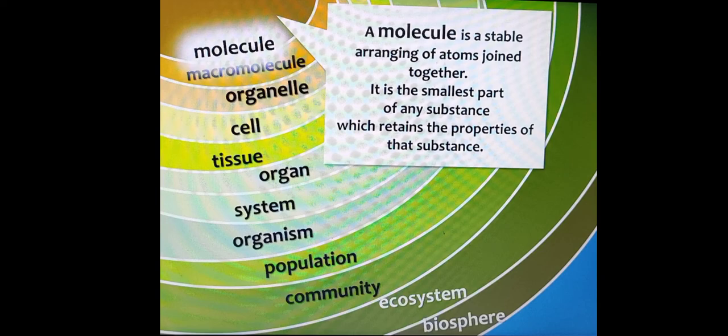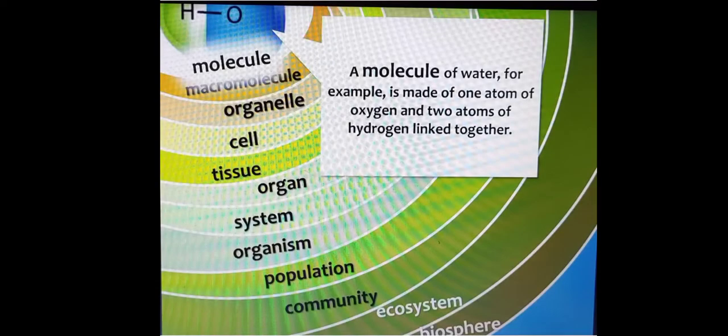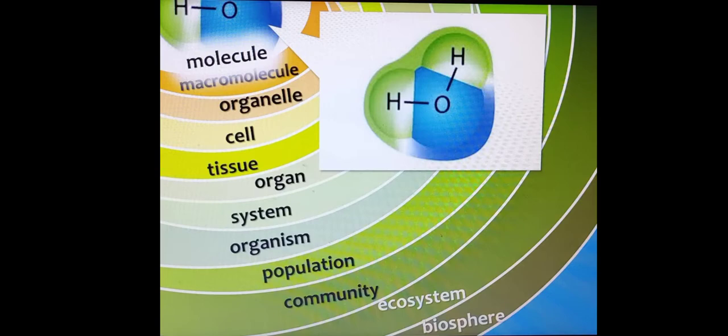Then comes molecule. A molecule is a stable arrangement of atoms joined together. It is the smallest part of any substance. Example, the water molecule, which is made up of one atom of oxygen and two atoms of hydrogen. This is the diagram of a water molecule — one oxygen atom connected to two hydrogen atoms by hydrogen bonding. Hydrogen bonding is a very strong bonding.